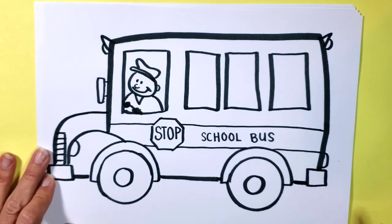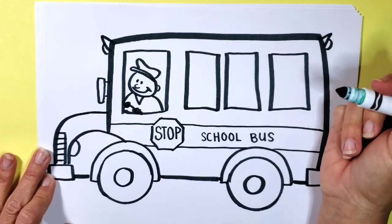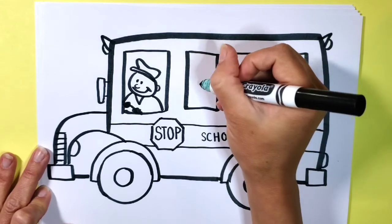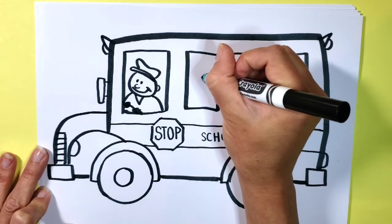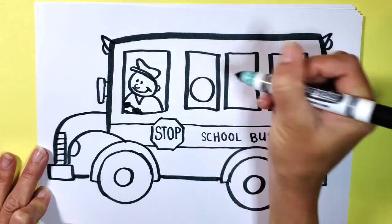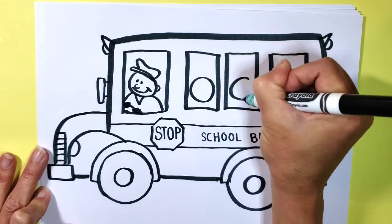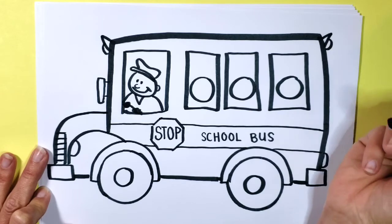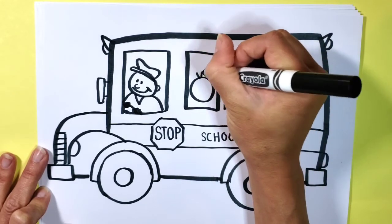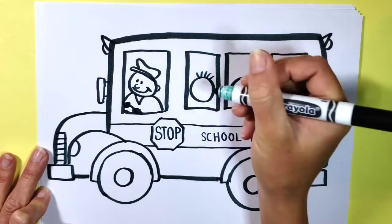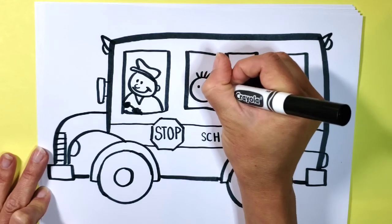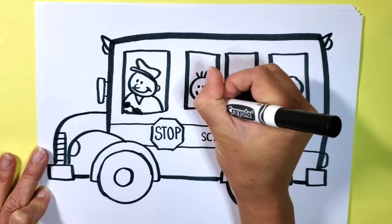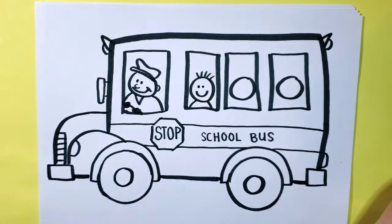Next of course we need some children so you can really have fun with this and make the children however you look. I'll probably just start with a couple circles for the heads. You can decide if they're going to be boys or girls so the boys can just have a couple hairs on the top, give them some eyes and a smile and then a little body. There's a boy.